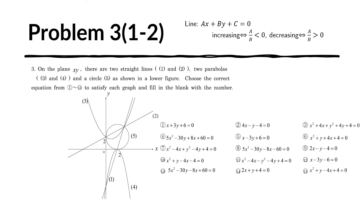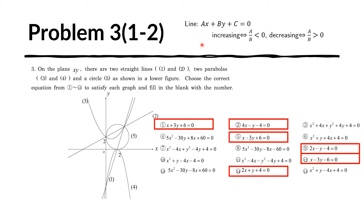First, let us find the equations of the two lines. Let us recall that the equation of a line is in standard form, where X and Y have exponents equal to 1 and we have coefficients. The first step is to eliminate those that are not lines, so let's look for those equations with this form. These are all those equations with this form.